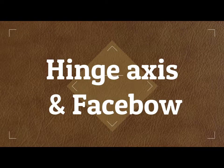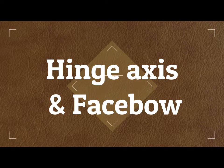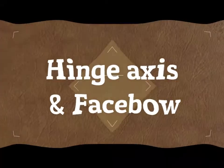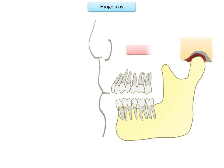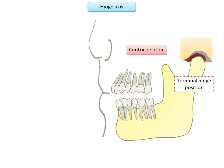In the previous presentation we discussed orientation of jaws, jaw relation, and hinge axis. This presentation is a continuation of that topic. To recap the significance of hinge axis and its practical application: in order to secure a centric interocclusal record, we attempt to freeze the terminal hinge closure at a convenient vertical opening, and we would not be able to do so if it were not for the hinge axis. Centric relation is independent of tooth contact.